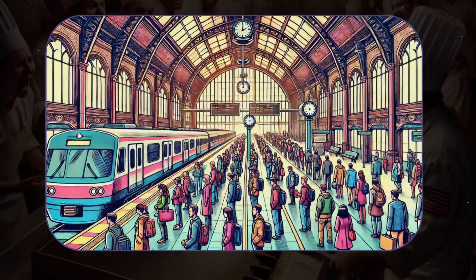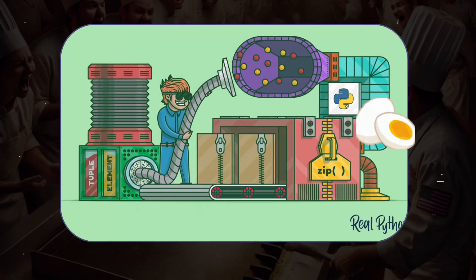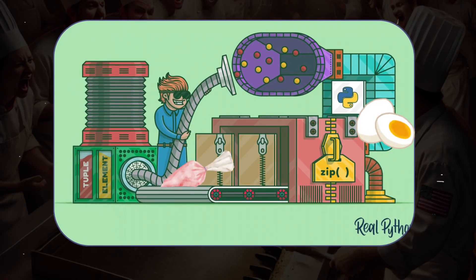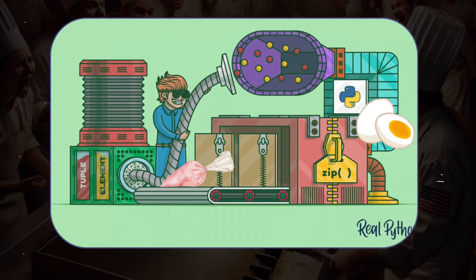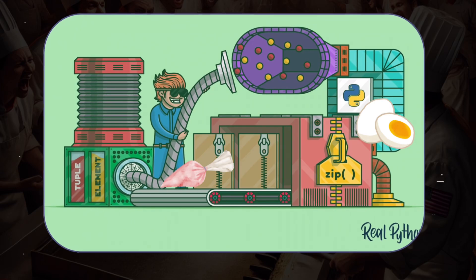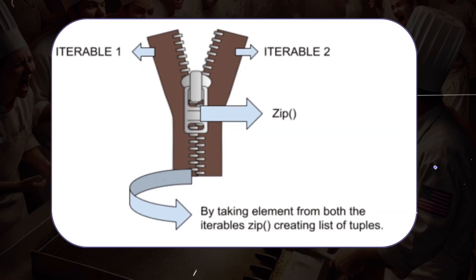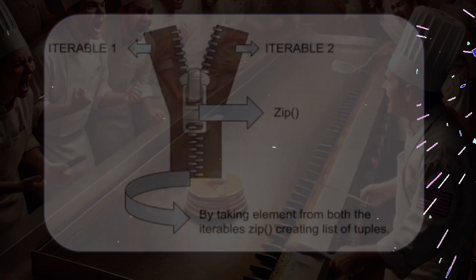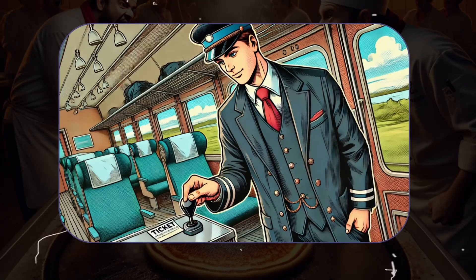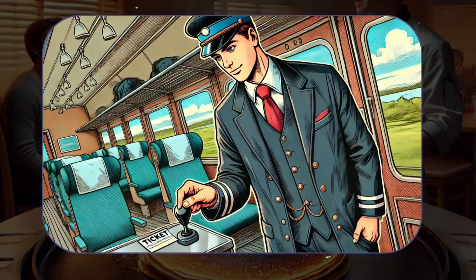Enter the train conductor: Python's Zip function, whose job is to pair these two lines of data perfectly. With a simple command, Zip takes the first ticket from one line and the first passenger from the other, then moves on to the next pair, and so on, until everyone is matched. Let's see this in action.